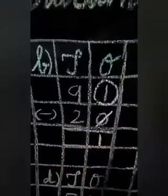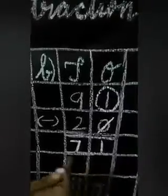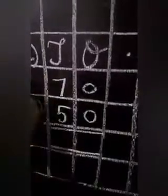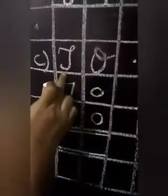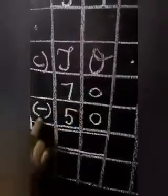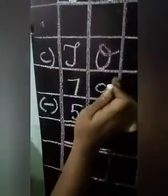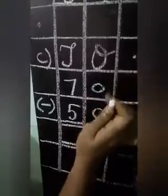Next, tens: 9 minus 2 — 9 in the mind, 2 in the finger — before 9: 8, 7 — so write 7 here. Now we have 71. So 91 minus 20 is equal to 71. Next one — ones and tens: 70 minus 50.